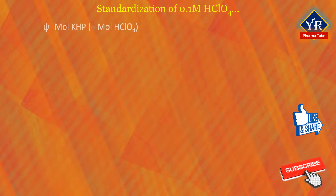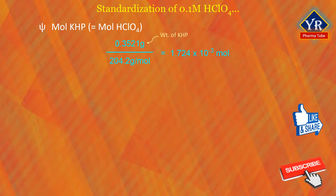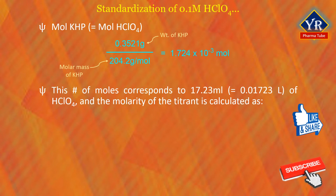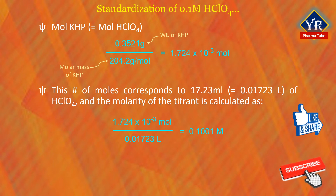It is to note that 1 molar potassium hydrogen phthalate is equal to 1 molar perchloric acid. Therefore, the weight of potassium hydrogen phthalate, that is 0.3521 grams, is divided by the molar mass of potassium hydrogen phthalate, that is 204.2 grams per mole, which is equal to 1.724 × 10⁻³ moles. This number of moles corresponded to 17.23 ml, which is equal to 0.01723 liters of perchloric acid titrant, and the molarity of the titrant is calculated as 1.724 × 10⁻³ moles divided by 0.01723 liters, which equals 0.1001 moles per liter.